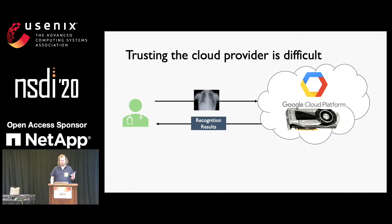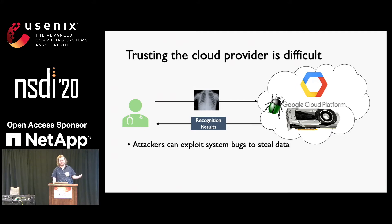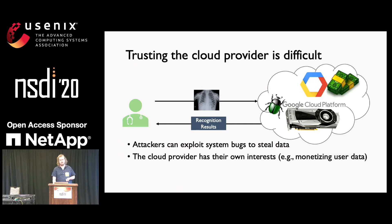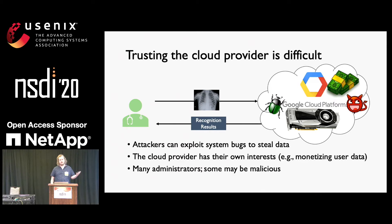In the real world, it's not quite that simple, because these are private images, so the doctor should be concerned about the privacy of their patients. Something that could go wrong — as we learned in the last talk — clouds are constantly under attack, and if an attacker was able to take advantage of some system-level bug, they could break in and steal these sensitive images. The priorities of the cloud provider are not necessarily aligned with the doctor's patient privacy, and there have been documented cases of administrators abusing their privileges to steal data.